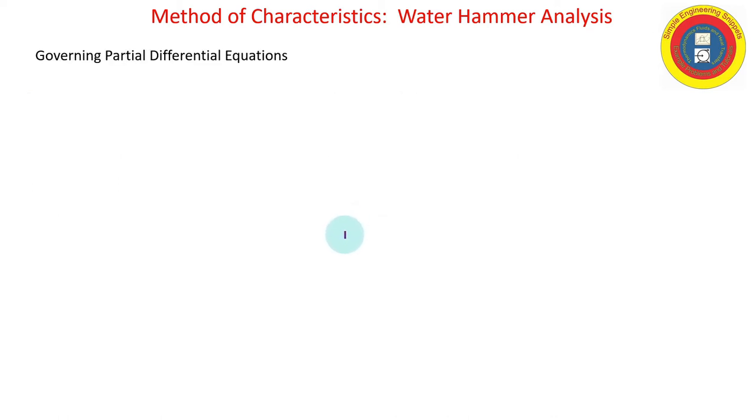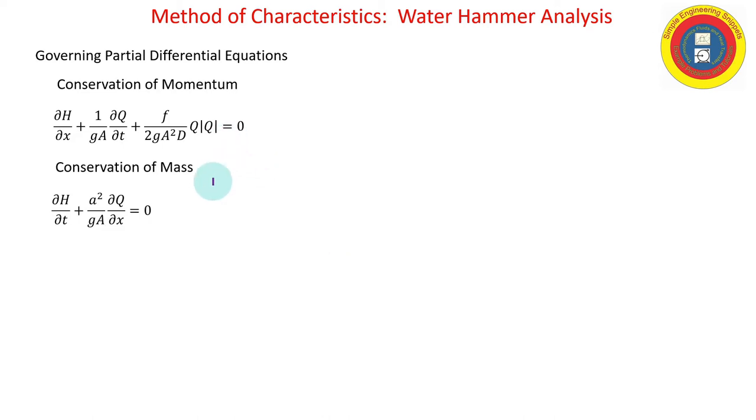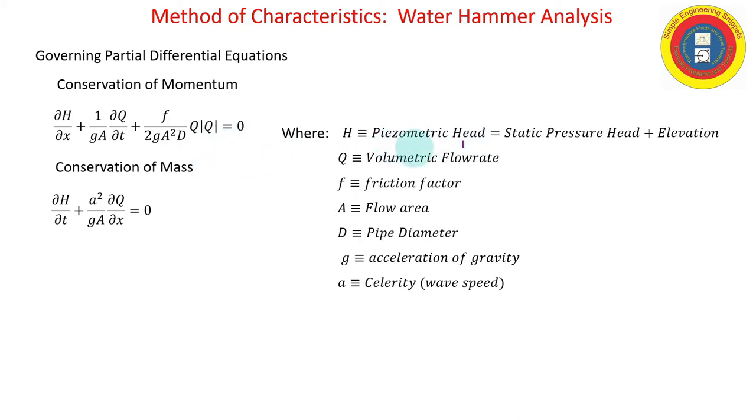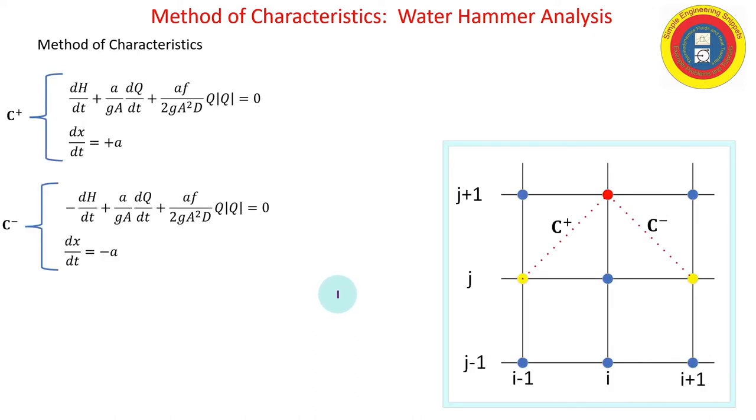Okay. So, doing a very quick review, the governing partial differential equations are from the conservation of momentum and conservation of mass. These are partial differential equations in X and T. And the method of characteristics will allow us to convert these into ordinary differential equations and be simpler to solve. Before we move on, we will be computing in piezometric head. And also, something that we don't always see in our fluid mechanics equations is the celerity of the wave speed. And that takes into account the compressibility of the liquid and also the elasticity of the pipe.